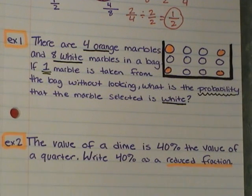Here's our first example. There were 4 orange marbles and 8 white marbles in a bag. If one marble is taken from the bag without looking, what is the probability that the marble selected is white? Since 8 of the 12 marbles are white, the probability that we're going to select a white marble is we have an 8 out of 12 chances.